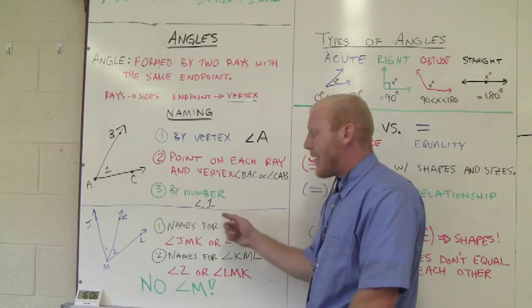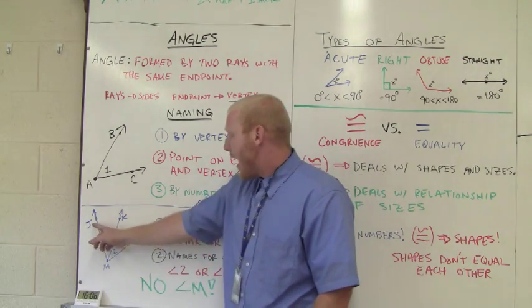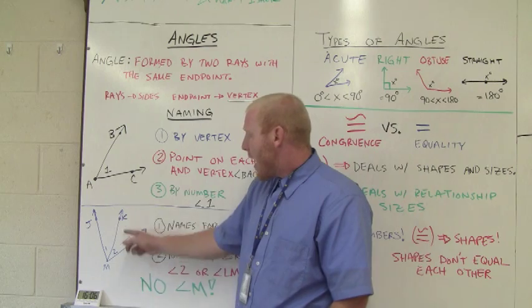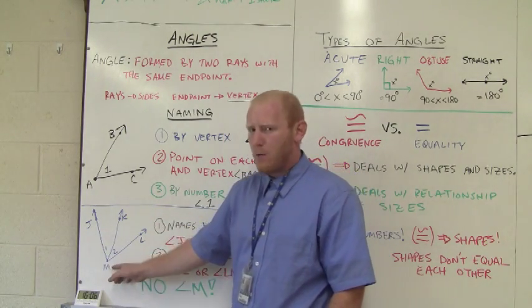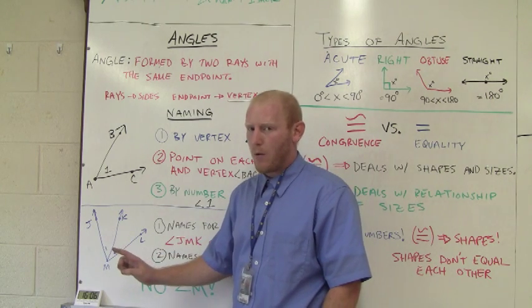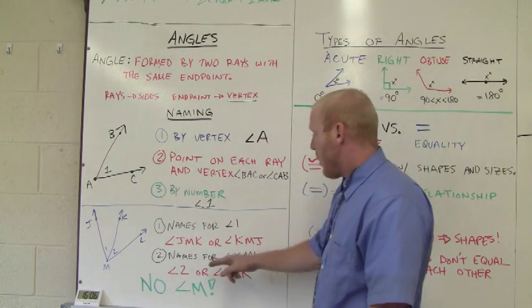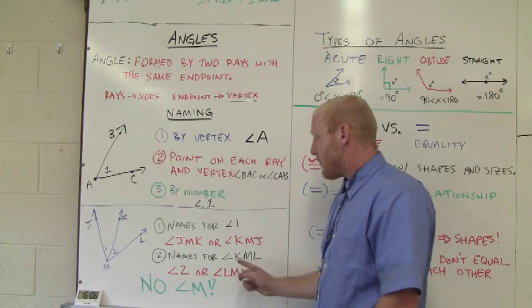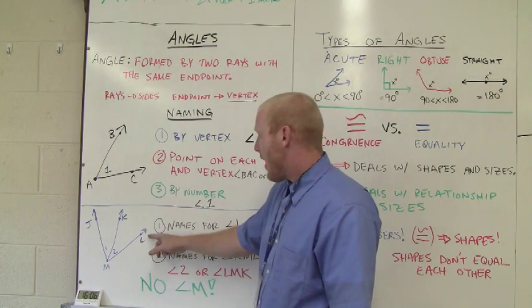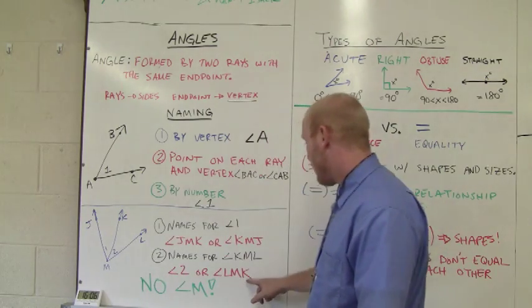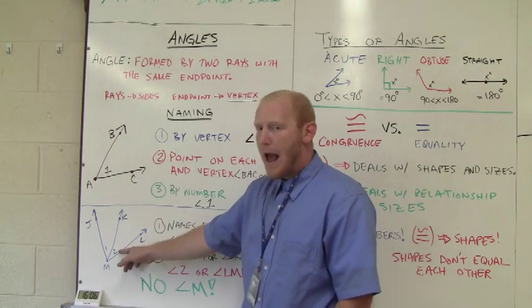But what are the names for angle 1 here? Well, I could say angle JMK and angle KMJ. The question is, can I say angle M for that one? We'll see in a second. Number 2: names for angle KML. That's this angle right here. Well, I could say angle LMK or by its number, angle 2.